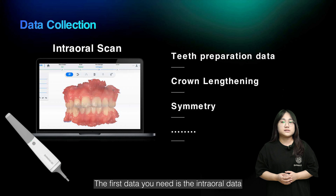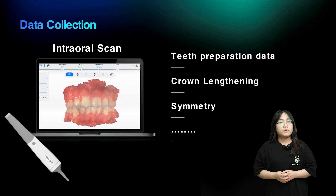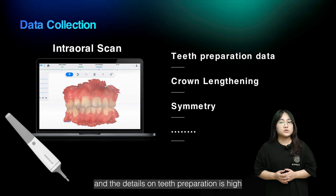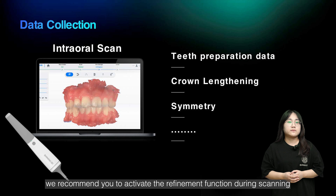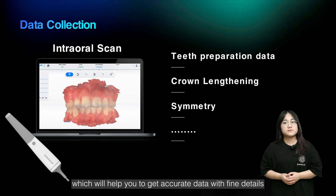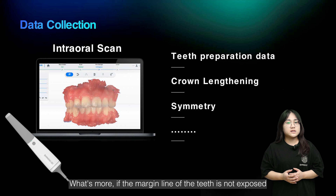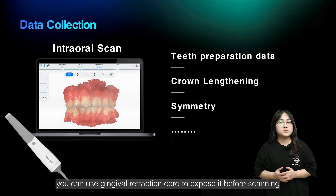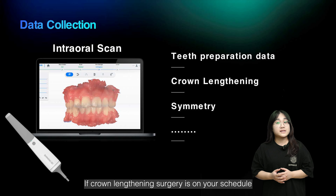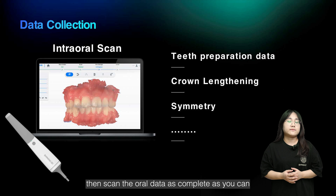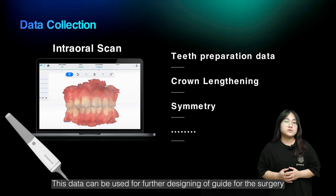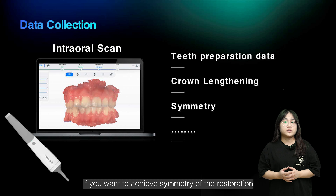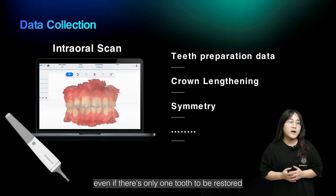The first data you need is intraoral data, which can be acquired by an intraoral scanner. Before you scan, pay attention to the following points. The requirements for accuracy and detail on tooth preparation are high. If your scanner is AeroScan3, we recommend you activate the refinement function during scanning, which will help you get accurate data with fine details. If the margin line of the teeth is not exposed, you can use gingival retraction cord to expose it before scanning. If crown-lengthening surgery is on your schedule, scan the oral data as completely as possible to include the full gingival data, which can be used for further designing of a guide for the surgery. If you want to achieve symmetry of the restoration, you need to obtain the full arc data even if there is only one tooth to be restored.